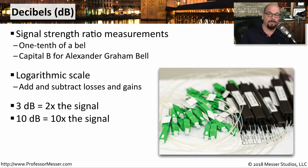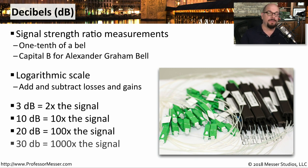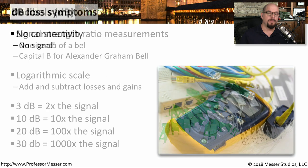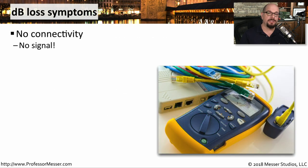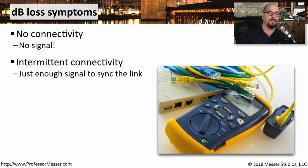If you increase the signal by 100 times, then the difference is 20 dB. And if the signal increases by 1,000, you would say that the increase was 30 decibels. One of the most obvious symptoms associated with dB loss is no signal at all, which means you're going to have no connectivity from a particular device. In those cases, it's relatively easy to troubleshoot because you know there's no signal coming through the line. But sometimes the problem is intermittent.